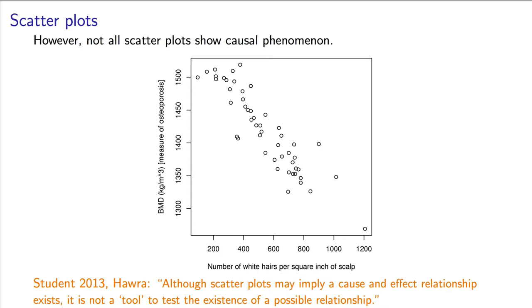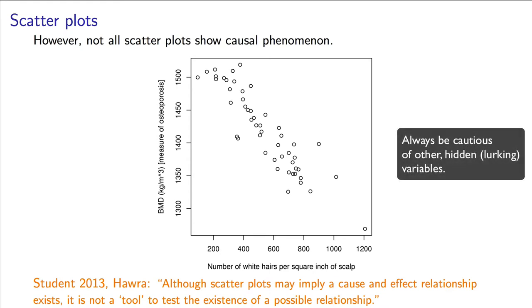That third variable, age, is a hidden variable, not shown here on the plots. We have to understand our system to discover it.